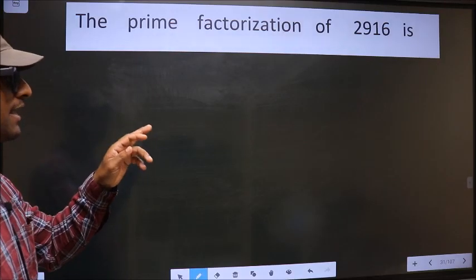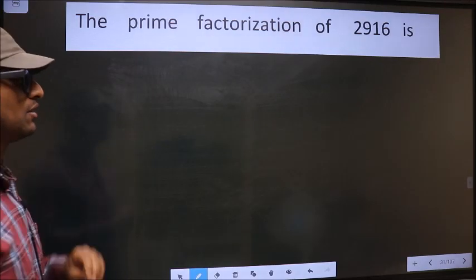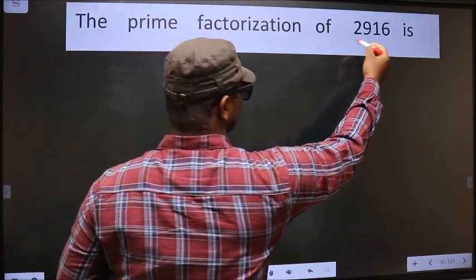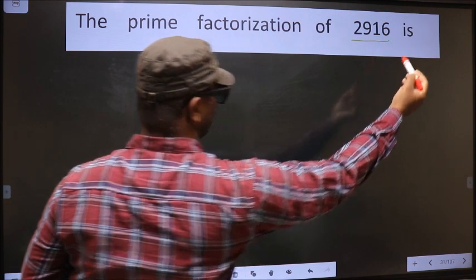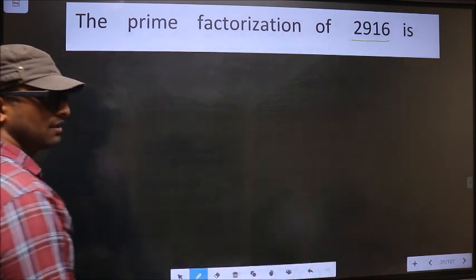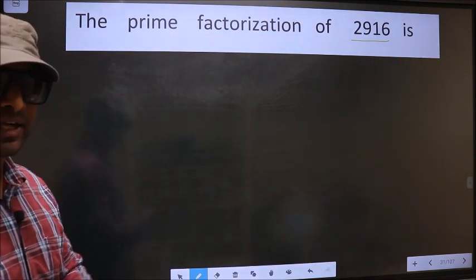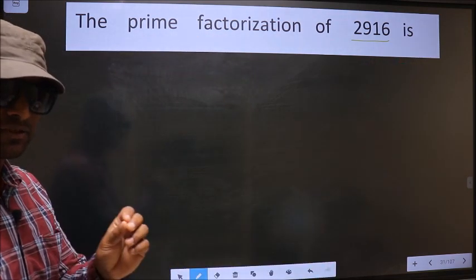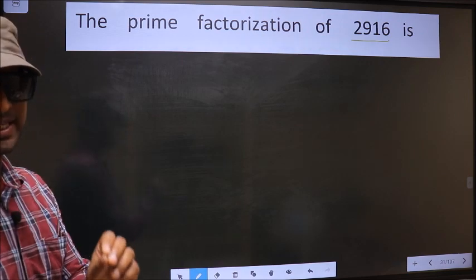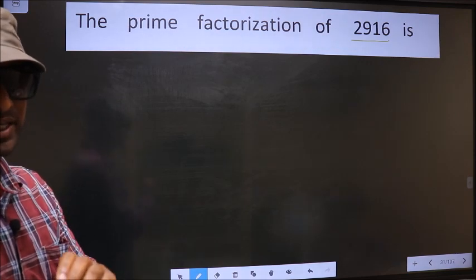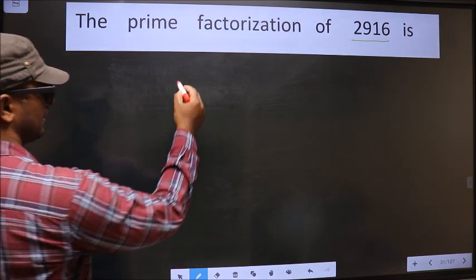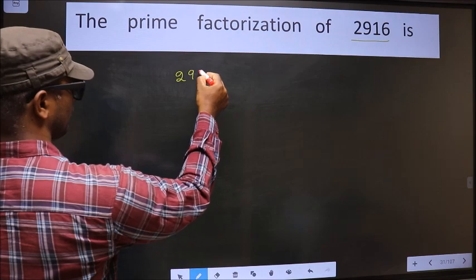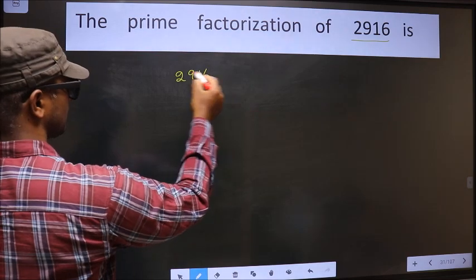The prime factorization of 2916. To do the prime factorization, first we should frame it in this way — that is 2916.